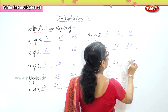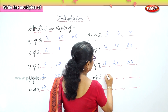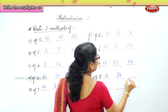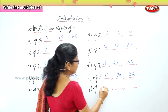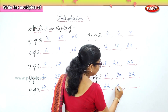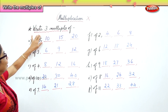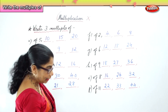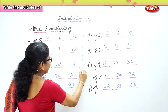Multiples of nine: nine, eighteen, twenty-seven, thirty-six. Multiples of eight: eight, sixteen, twenty-four, thirty-two. Multiples of eleven: eleven, twenty-two, thirty-three, forty-four. Today we learned to write three multiples — if you know the tables of each number, it's very easy to do the multiples.